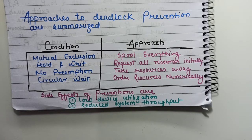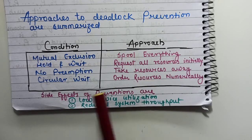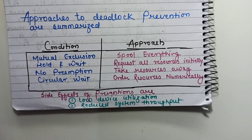The second side effect is reduced system throughput. Because if we give all resources to one process at a time, others must wait. Also, if a process is about to complete and we take away its resource, it won't be counted as completed in throughput calculations. So reduced system throughput occurs because every process needs more waiting time to complete its task.